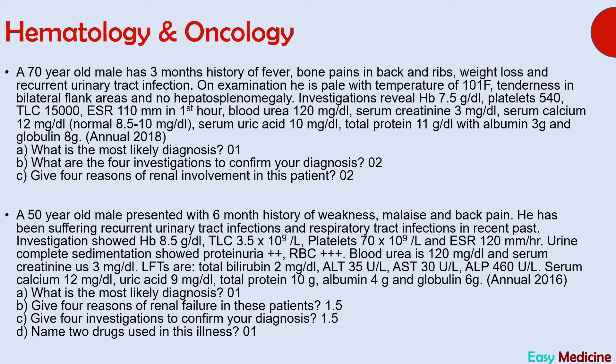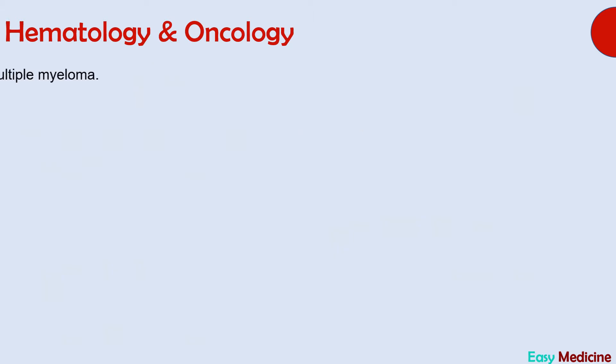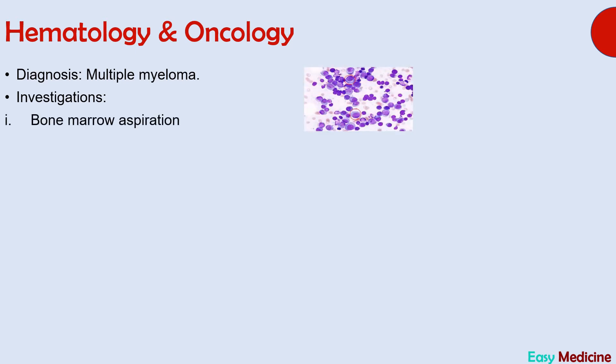The diagnosis for the next case is multiple myeloma. Important points leading to this diagnosis are back pain, recurrent urinary and respiratory tract infections, and investigations showing increased ESR, blood urea, serum creatinine, serum calcium, and total protein. Normally albumin is higher than globulins, but in multiple myeloma the concentration of globulins is higher than albumin. Investigations include bone marrow aspiration, which is the diagnostic test — presence of more than 30% plasma cells in bone marrow sample is diagnostic.